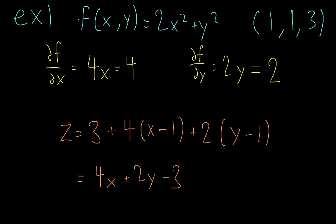Now that we have this tangent plane, we can approximate the function in a small neighborhood around the point. For example, if you want to find the value of the function at (1.1, 1.2), you can plug that into the tangent plane equation to get an approximation for the value of the function.